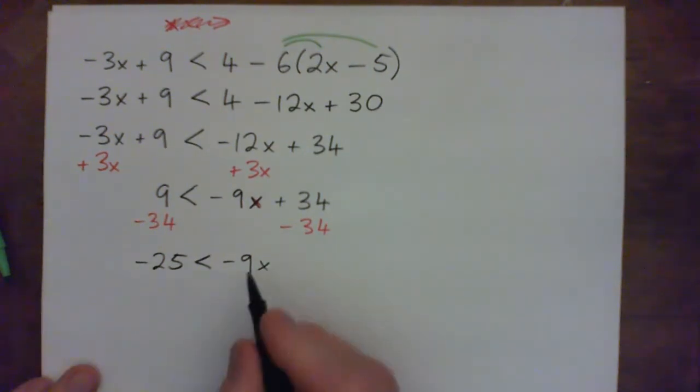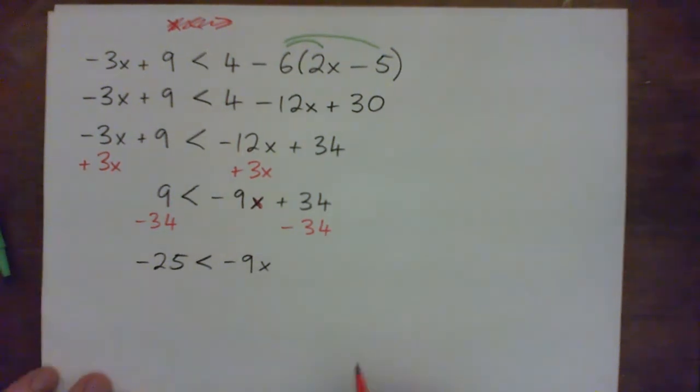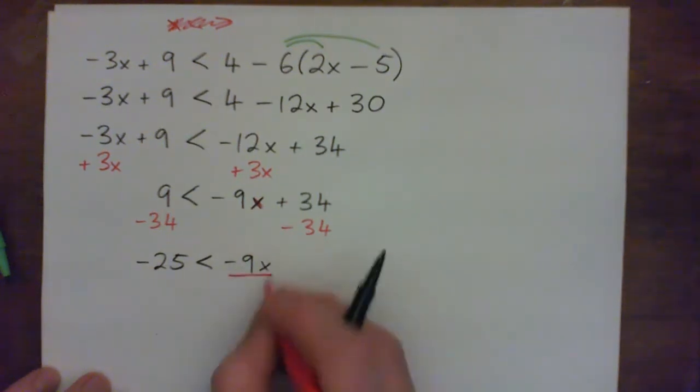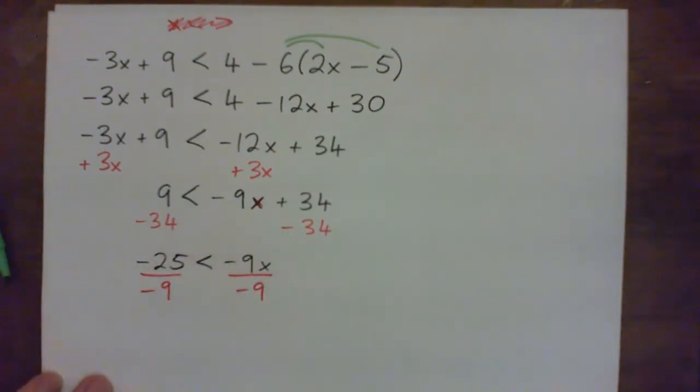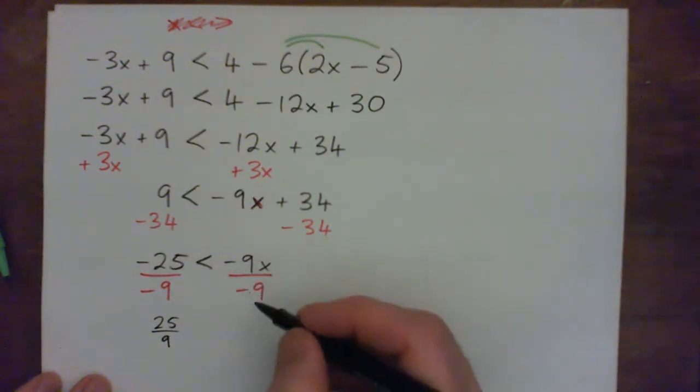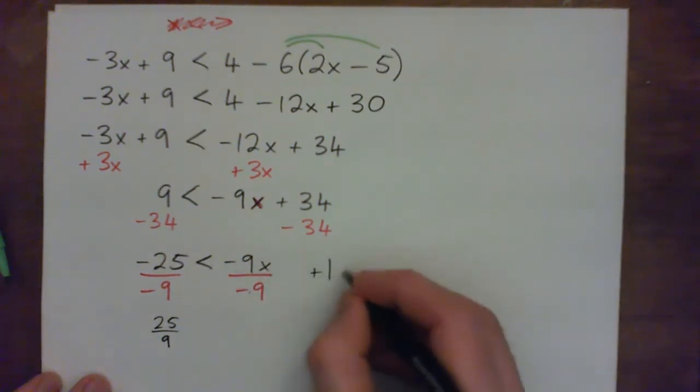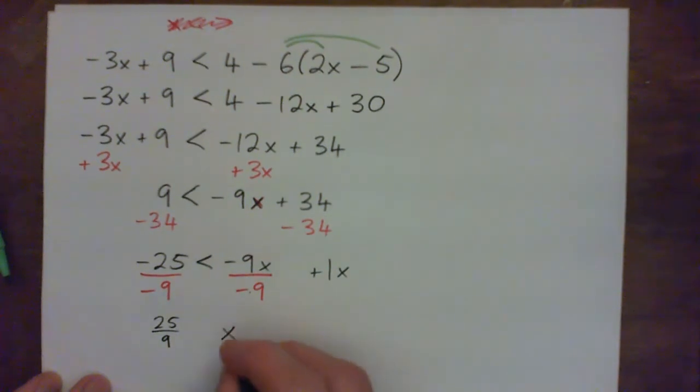Now x is being multiplied by negative 9. So to undo that we need to divide by negative 9 on both sides. So on the left we get negative over negative positive, 25 over 9, 25 ninths. And on the right we get negative over negative positive, 9 over 9 is 1, so just x. The question is what direction should the inequality sign be?